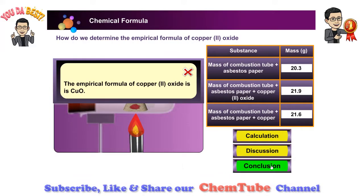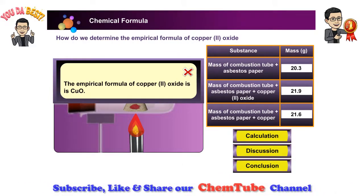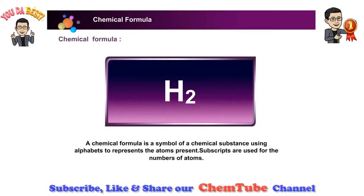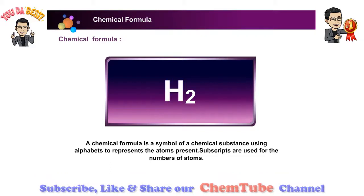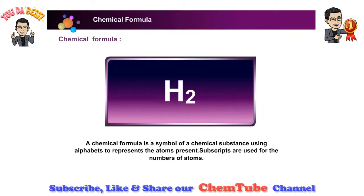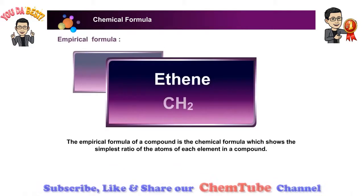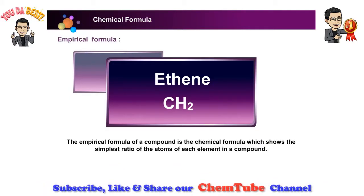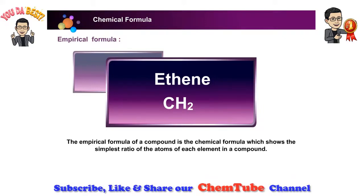The empirical formula is a symbol of a chemical substance using letters of atoms and subscript numbers to show the numbers of each type of atom present in the substance. The empirical formula of a compound is the chemical formula which shows the simplest ratio of the atoms of each element in a compound.